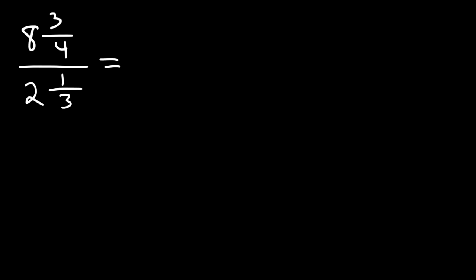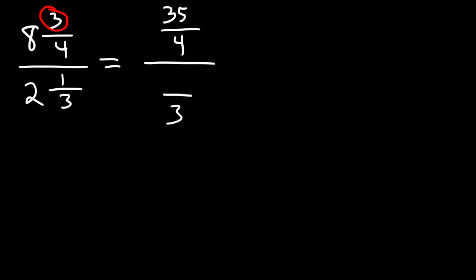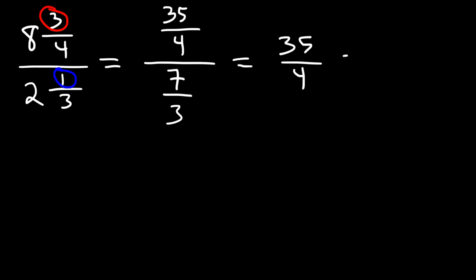One good way to do this problem is to convert each mixed number into an improper fraction. Starting with the first one, we rewrite the denominator — in this case it's 4 — and then multiply 8 times 4 which is 32, and then add 3 to get 35. For the bottom one, 2 times 3 is 6, plus 1 which is 7. So we have 35 over 4 divided by 7 over 3.